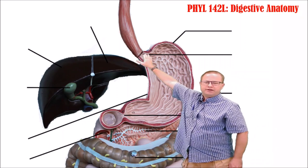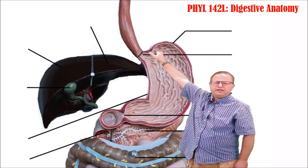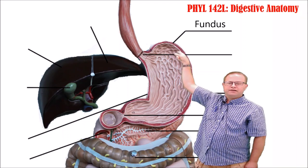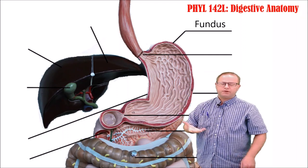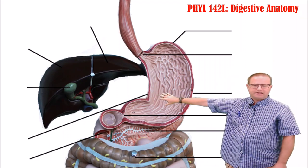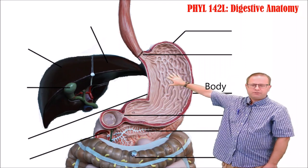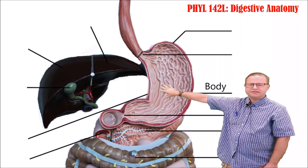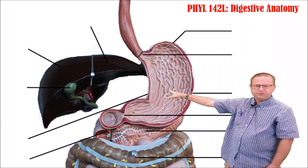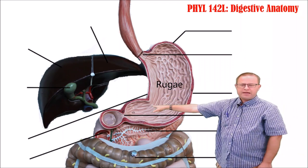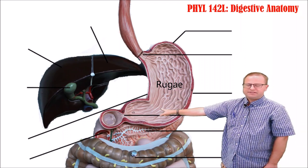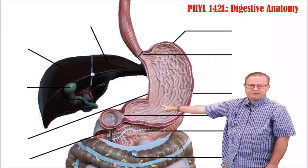The cardiac sphincter is up here. This area up here is called the fundus — the round area of the stomach where food storage occurs. Back down here we have the body of the stomach, where most of the mechanical processing and agitation happens. You can also see these grooves called rugae, which allow more surface area for the stomach and enable it to expand after large meals.